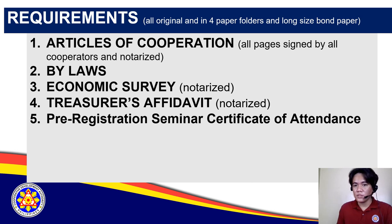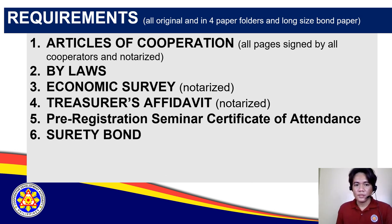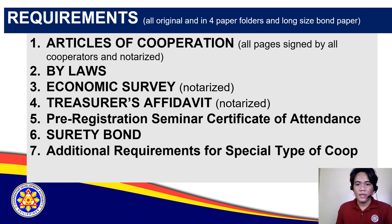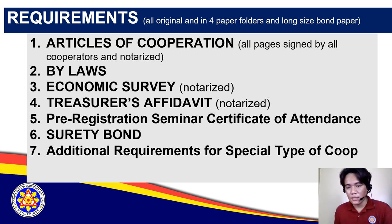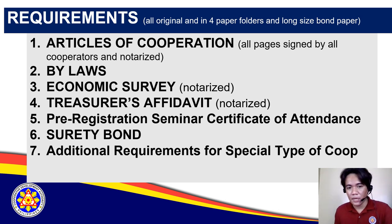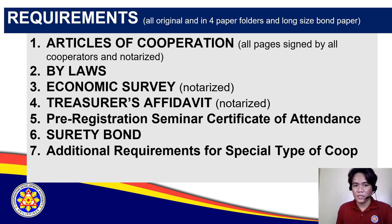Also include: the original pre-registration seminar certificate (1 original, 3 photocopies) and the surety bond (1 original, 3 photocopies). For special types of cooperatives — for example, transport cooperatives require endorsement and recommendation from LTFRB/OTC; agrarian reform beneficiary cooperatives require documentation from DAR.